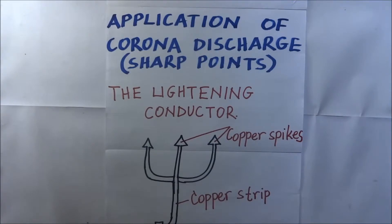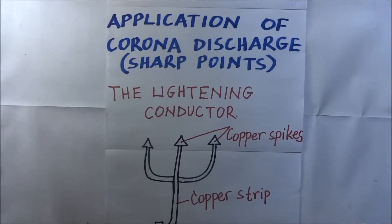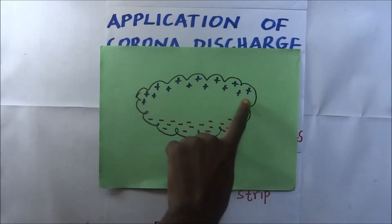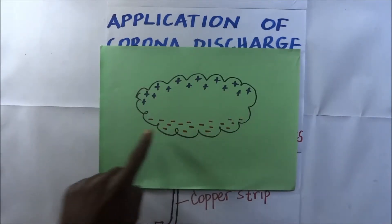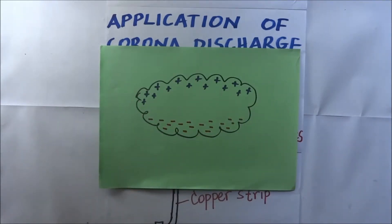During a storm, the clouds move fast and as a result rub against each other and against air. This rubbing makes them acquire a charge. This charge is normally distributed in a cloud such that the top part is positively charged and the bottom part is negatively charged.